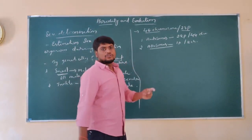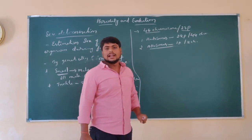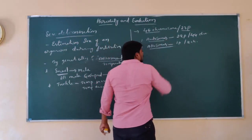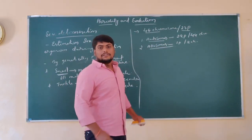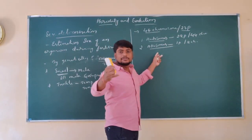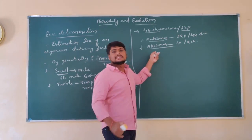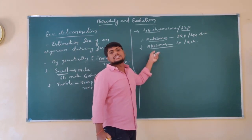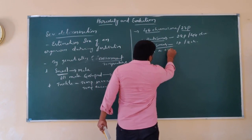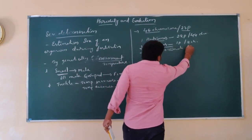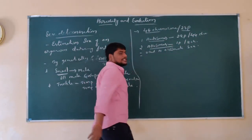The allosomes are the chromosomes that help in the determination of sex. Autosomes do not transfer the characters from one generation to the next, whereas allosomes can transfer characters from one generation to the next. So allosomes are used to estimate the sex of an individual.